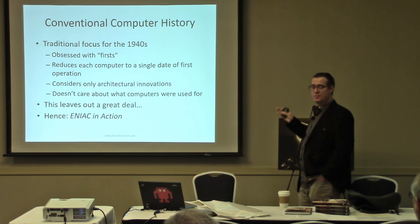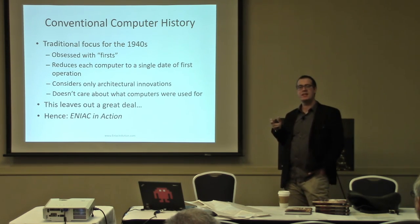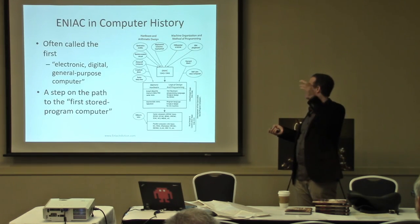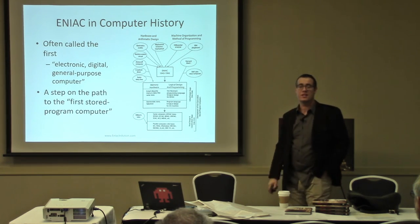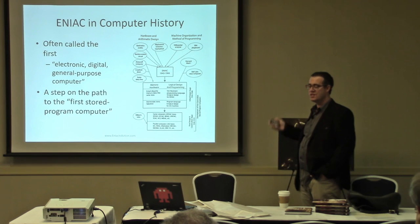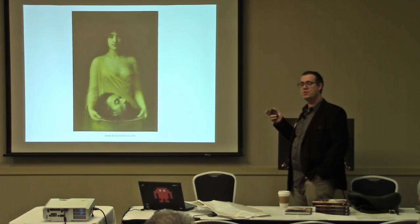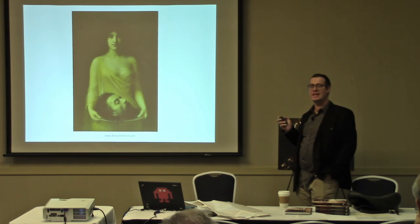Conventional history of this period has been obsessed with firsts and tended to reduce each computer to a single date of first operation. ENIAC doesn't even get installed for the people who paid for it and start doing useful things until 1948, but nobody is really interested in ENIAC after 1945 because it's conceived as this thing that sits between earlier technologies and later developments. The dates that Burks gave to ENIAC are '43 to '46 — he basically lost interest in it when it started working. In this book, we're interested in ENIAC for much more than that.